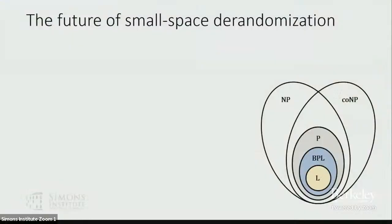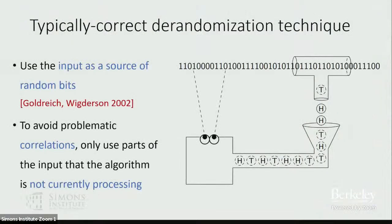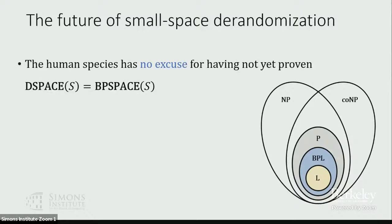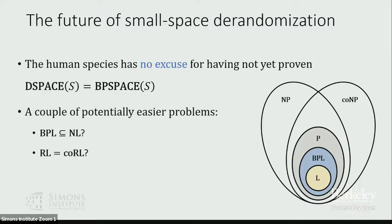So that was an example of a partial de-randomization of space-bounded computation. I want to emphasize that there are no barriers known — there's nothing known that's stopping us from proving a full de-randomization of space-bounded computation. I'd love to chat with you about it if you're interested in working on this problem, or maybe some easier problems along the way.